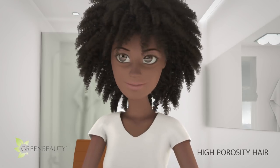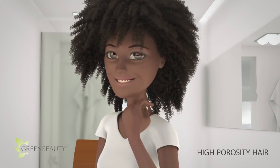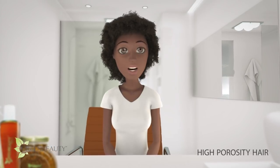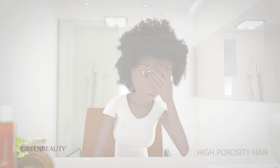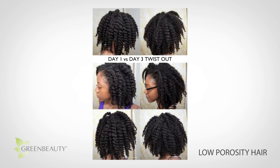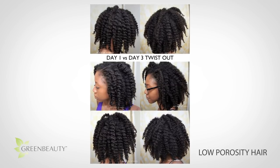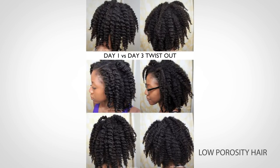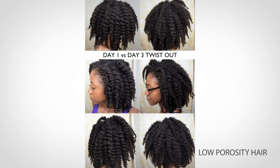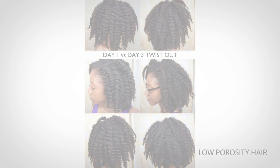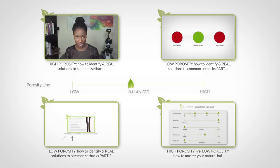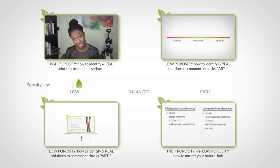Hair that's high in porosity tends to take in a lot of moisture from the air easily. So even on a regular day, the second you step outside, your hair puffs up and completely loses its pattern. On the other hand, hair that's on the lower end of porosity has super tight cuticles that block moisture from entering and escaping easily. Heatless styles done on wet hair tend to tighten a lot and can hold a stiff twist out pattern for days. Overall, if you watched the last videos on high and low porosity and felt like your hair's behaviors were not as extreme and somewhat in the middle, your hair most likely has a more balanced porosity.